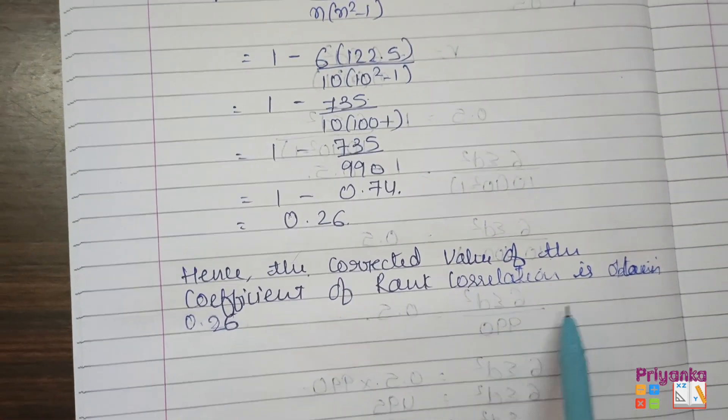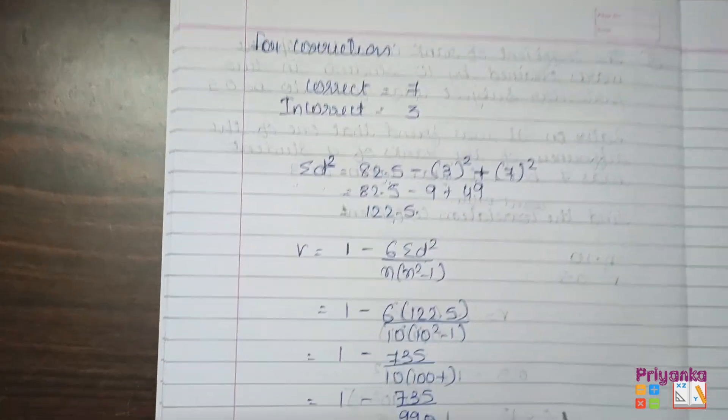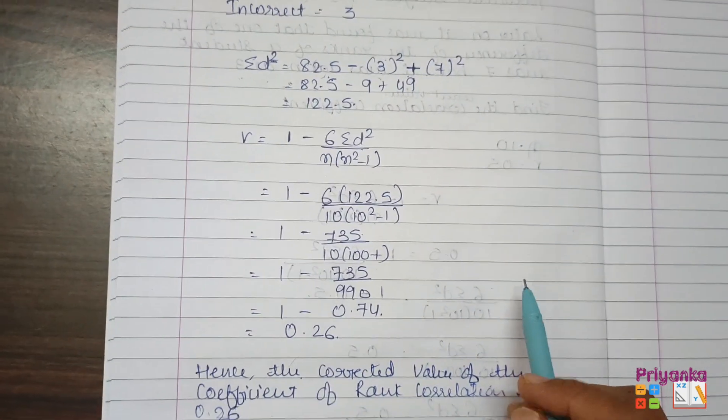So for this you have to write, hence the corrected value of the coefficient of rank correlation is obtained 0.26, and that's the end of the exercise.